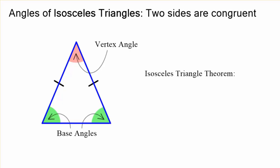We're going to be using two different theorems today. The first is the isosceles triangle theorem, which says that if a triangle is an isosceles triangle, then the base angles are congruent, so they will have the same measure.